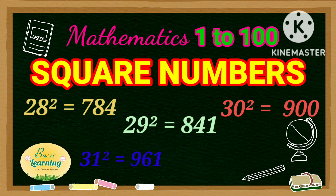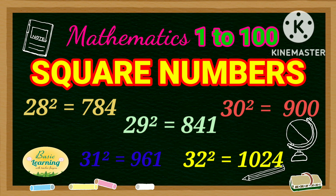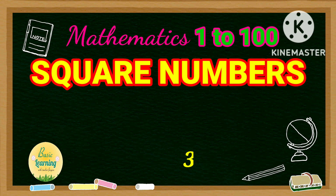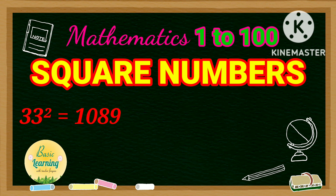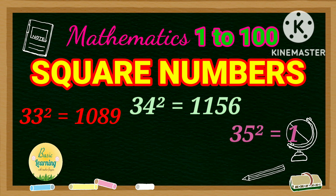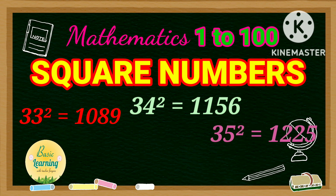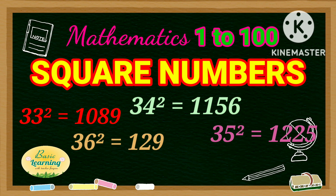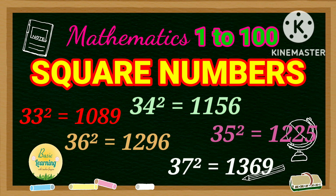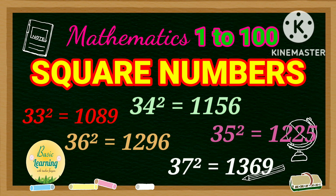Square of 31 is 961. Square of 32 is 1,024. Square of 33 is 1,089. Square of 34 is 1,156. Square of 35 is 1,225. Square of 36 is 1,296. Square of 37 is 1,369.